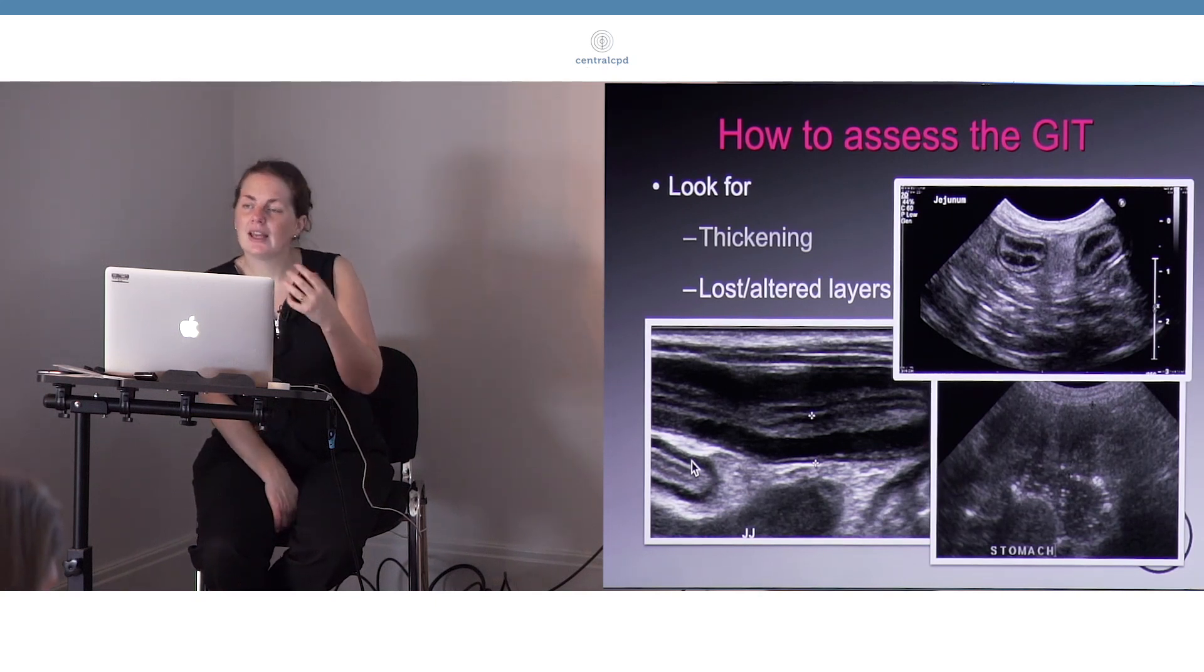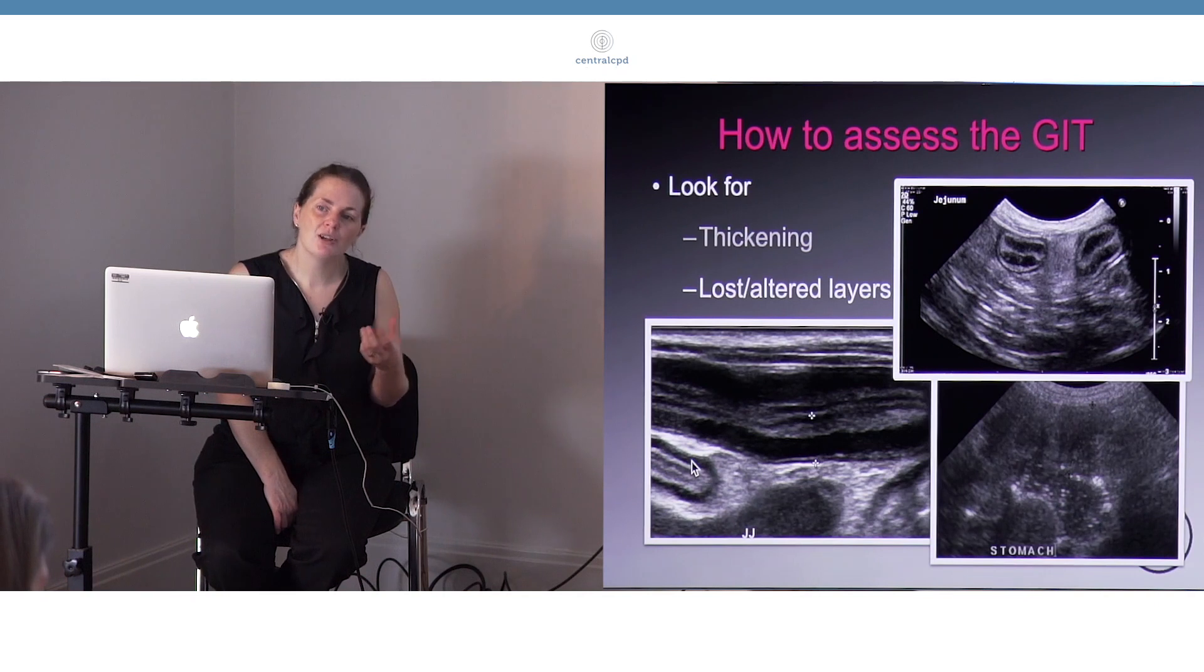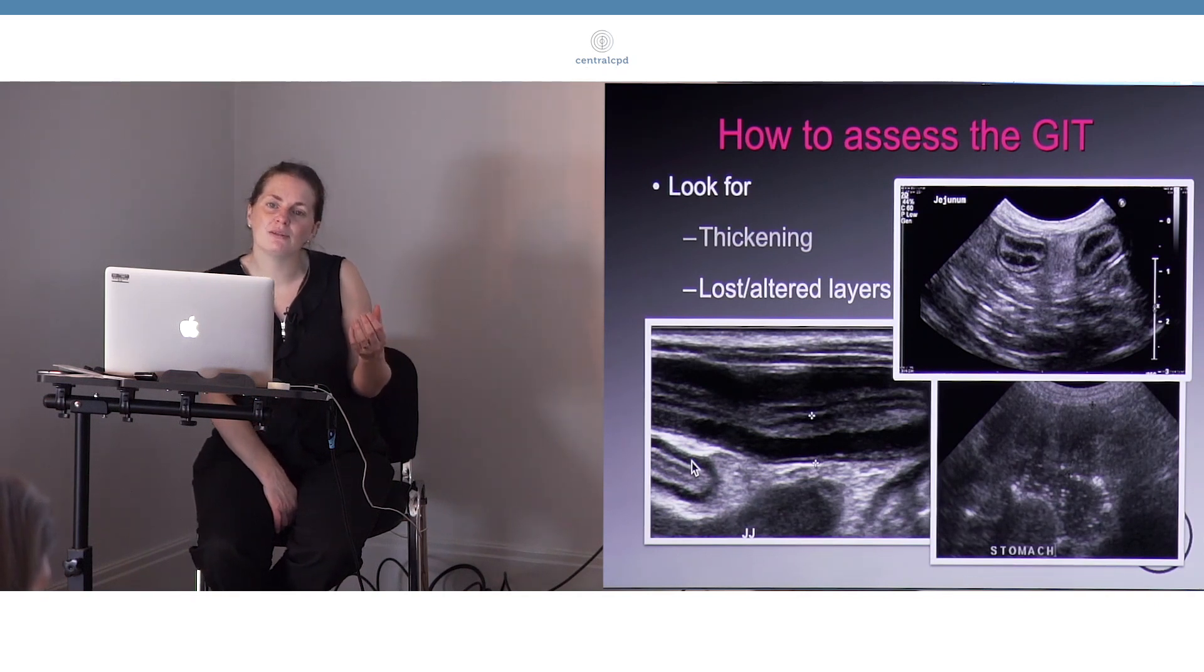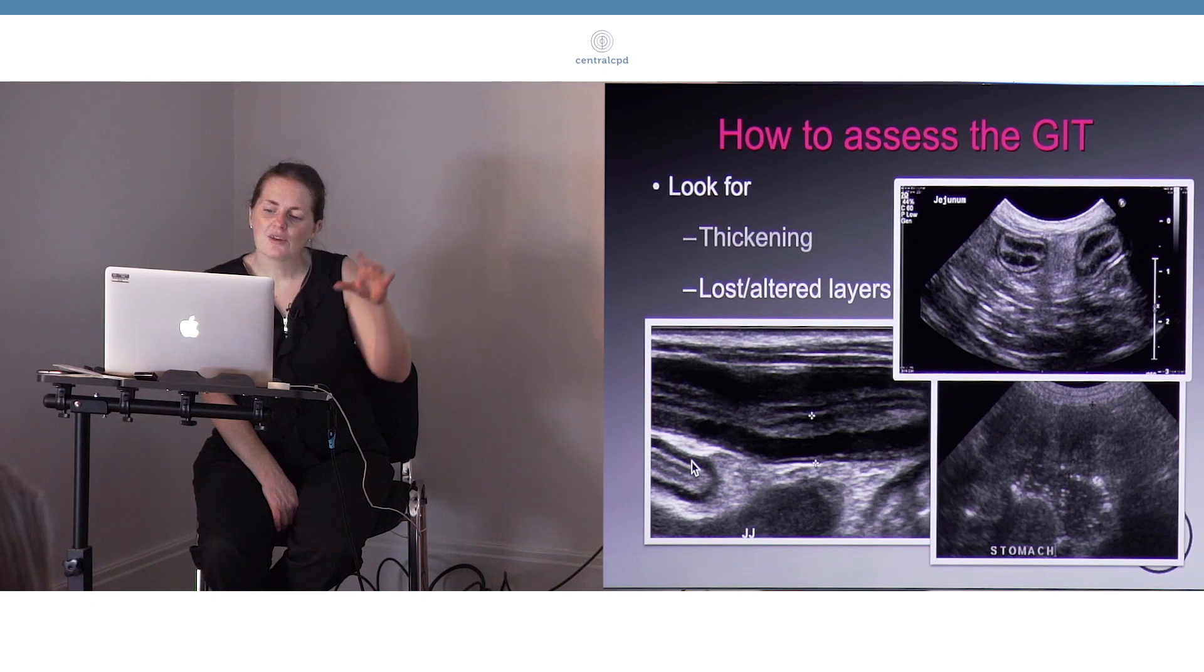But also, again particularly in cats, can be seen with lymphoma. You can see sometimes thickening of the muscularis in cases where there is muscular hypertrophy. So these patients that have pyloric stenosis because of muscular hypertrophy, or if there's a downstream obstruction, sometimes you'll see this thickening present as well.